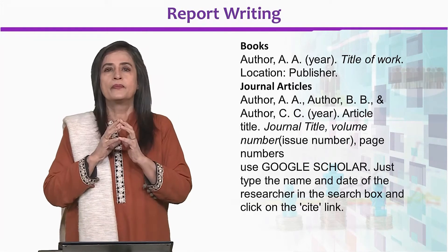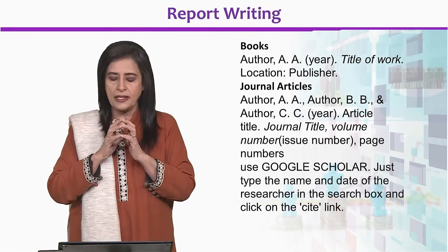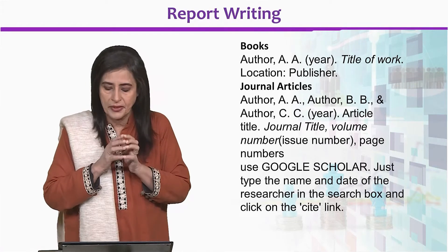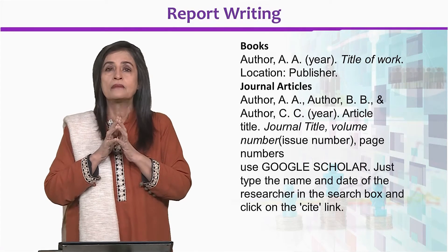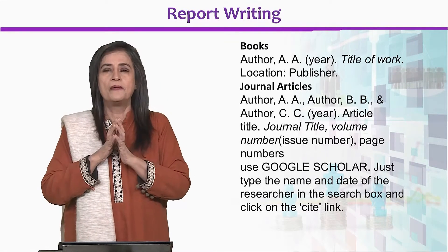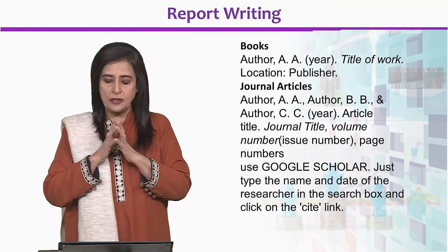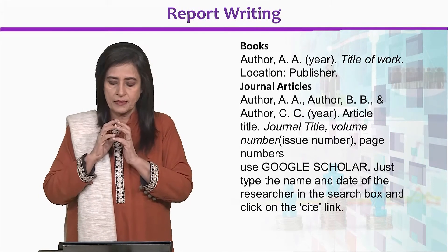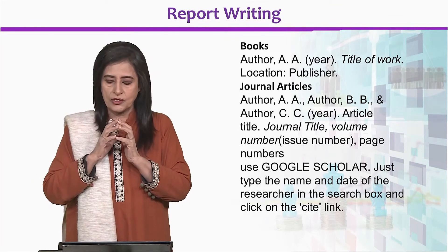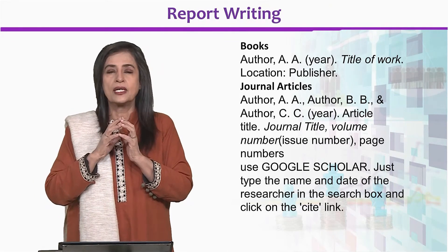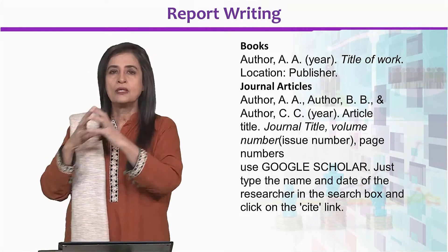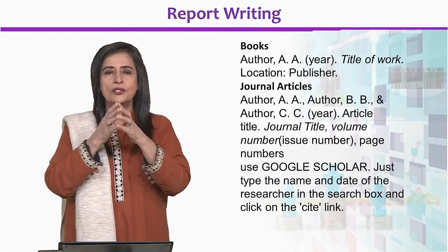Journal articles are also given in a certain format. Journal articles are those which are published in professional journals and they are available online and in print copies. There could be more authors — more than one or even six, seven authors. Each one is separated by certain punctuation as the format shows. Article ka title, phir journal ka title, volume number, sometimes issue number and page numbers. It's very easy — if you want to cite something, type in Google Scholar the name and date of the researcher in the search box and click on the cite link. They will give you a citation in the appropriate format to mention or cite that study or research in your own work.